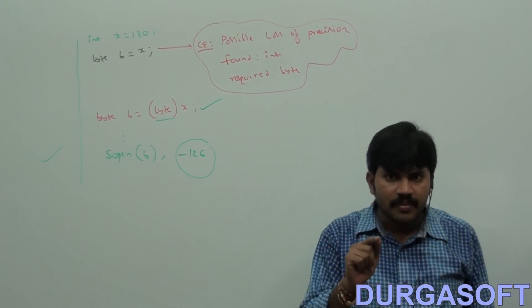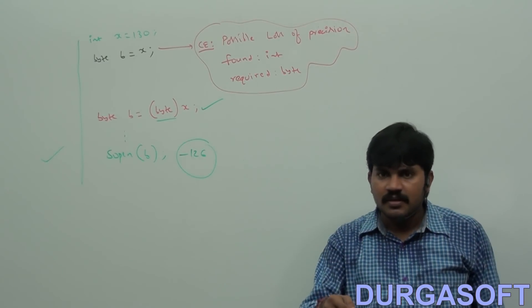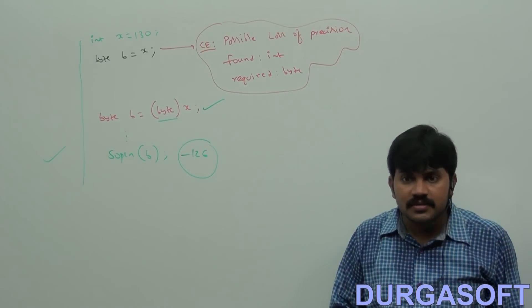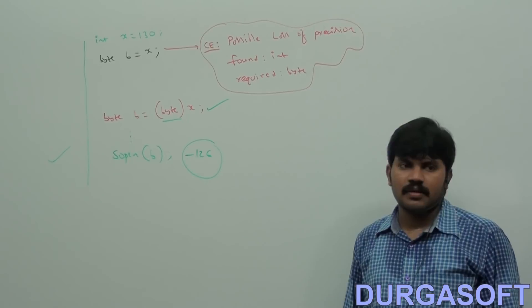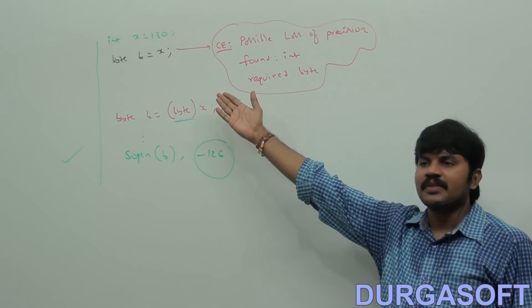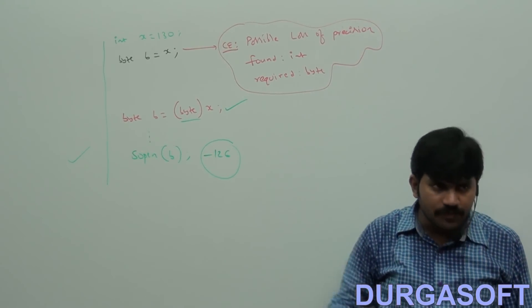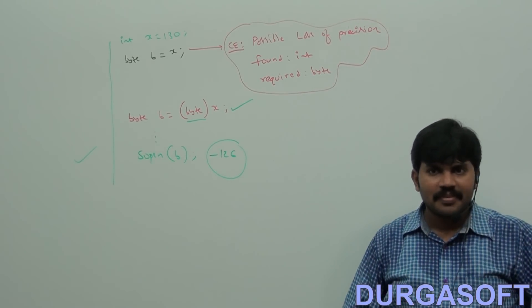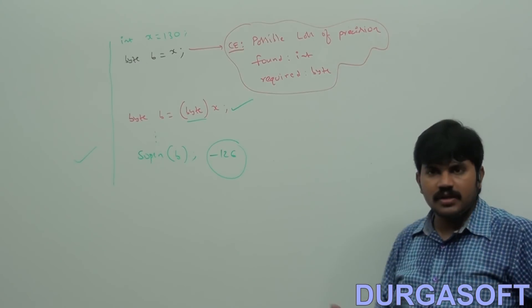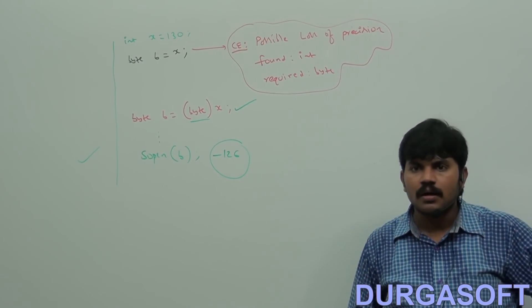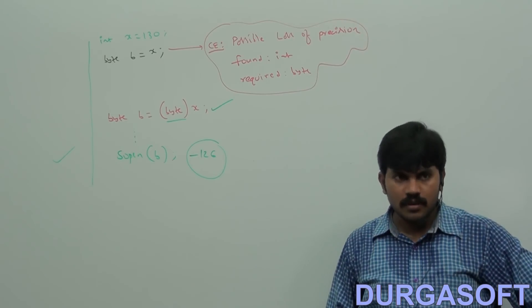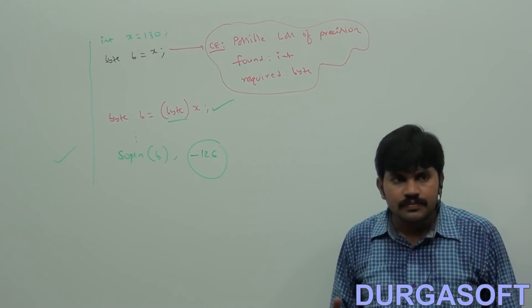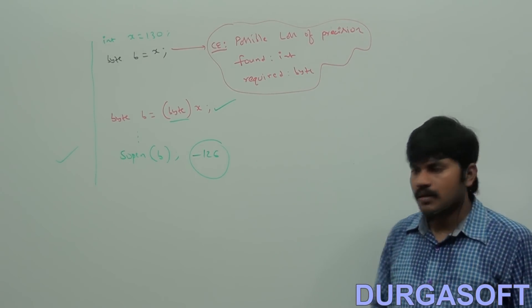They may ask 150 instead. So what is the answer then? If they are asking 150, then the answer is minus 108. So, minus 108 is the answer when the input is 150.